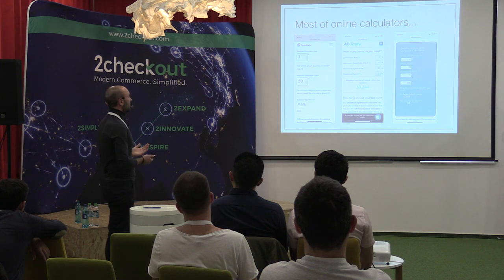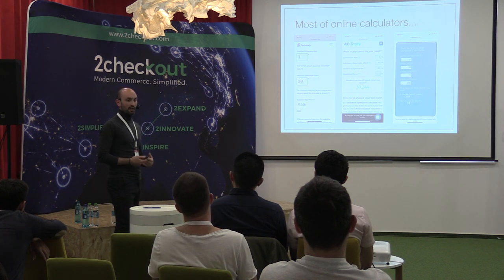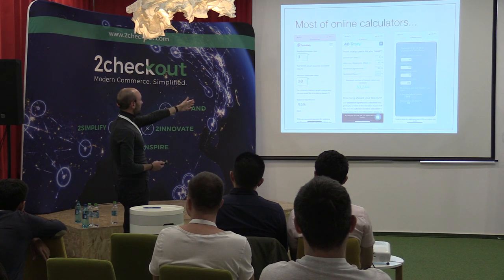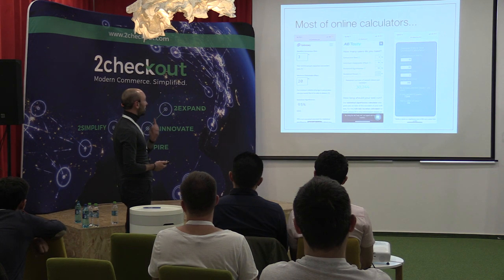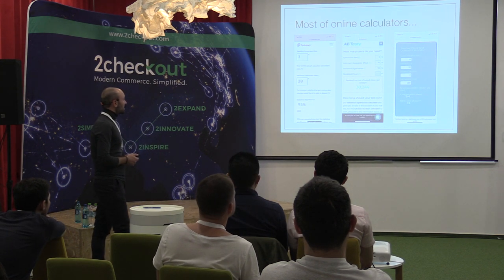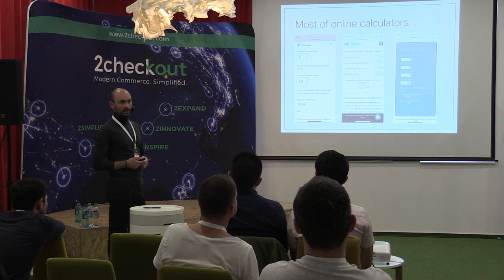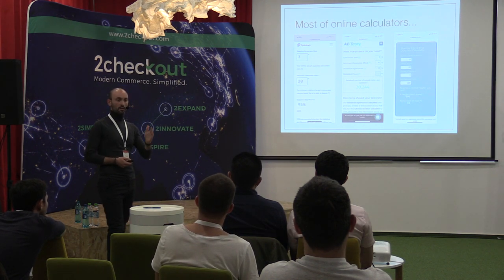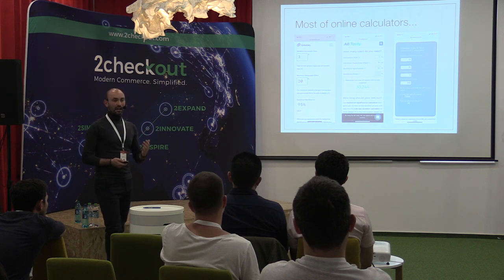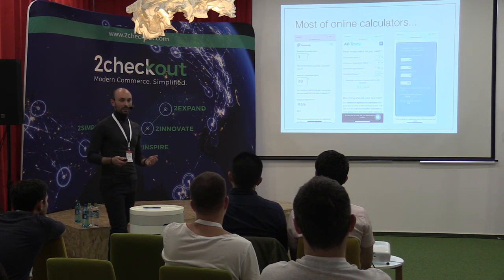But what you see from the first calculator is that it's missing one thing that for me is vital, which is the power of a test. Because when you get a winner, the power tells you how confident you are that pushing this change live is going to get you the same result. And if you go to AB testing tools, you're going to see statistical significance and statistical power. But actually, it's missing something else, which is the number of experiences that you're going to test.